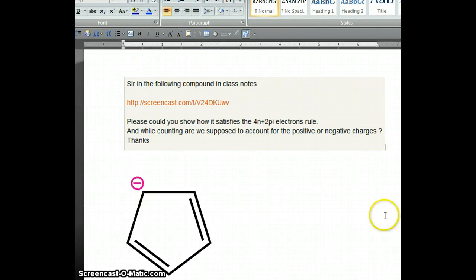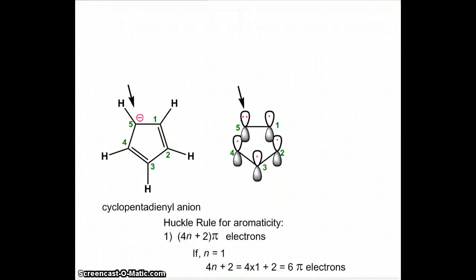This is in regard to a question which one of our students asked. The question is pertained to the aromaticity of this compound. The question is, could you show us how it satisfies the 4n plus 2 pi electron rule, which is the rule used for aromaticity. I have redrawn the structure here.